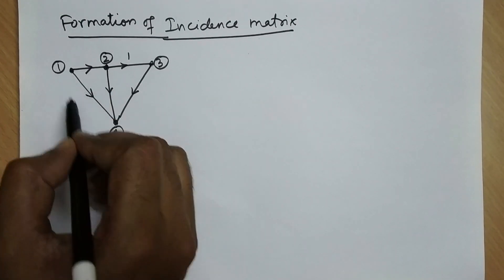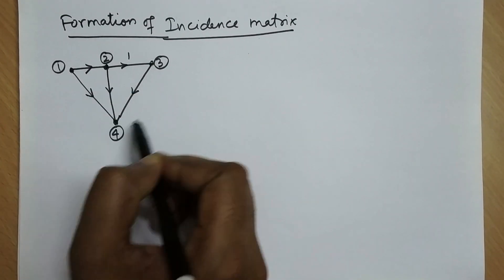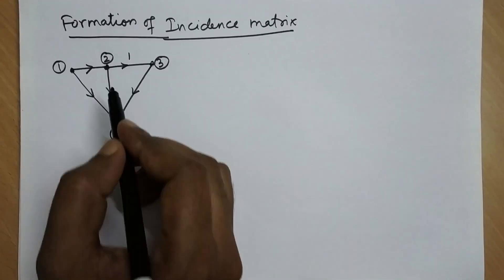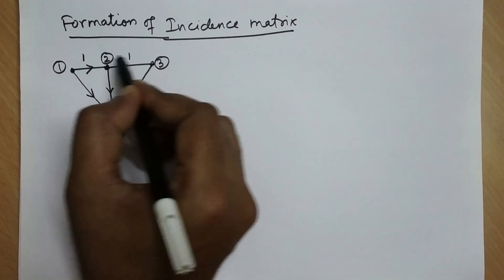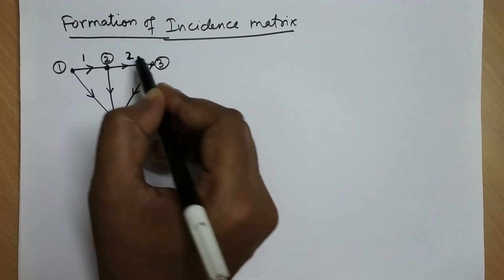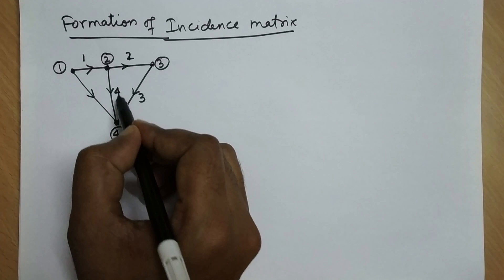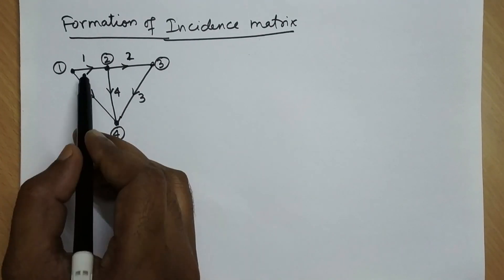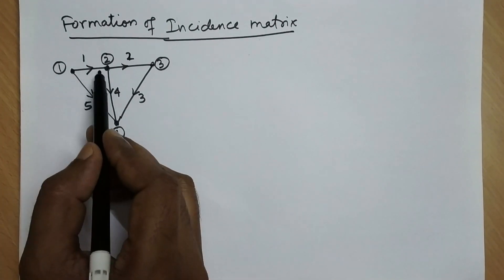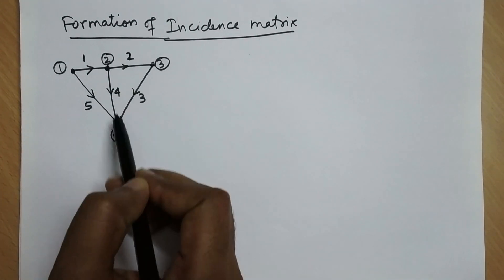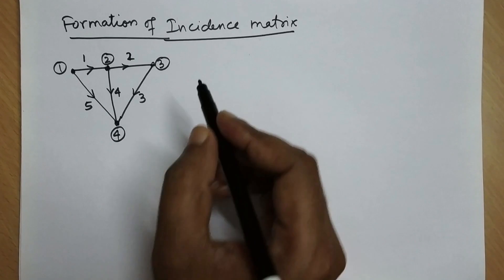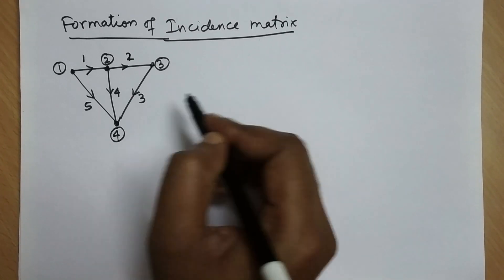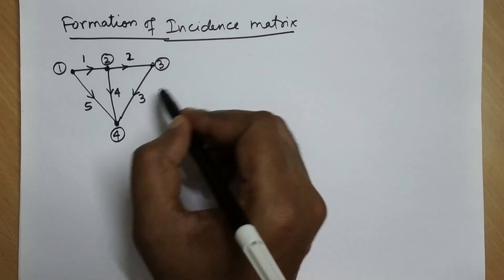Let's say this is a network graph consisting of four nodes and five branches called one, two, three, four, and five. The direction of current is assigned in all five branches.